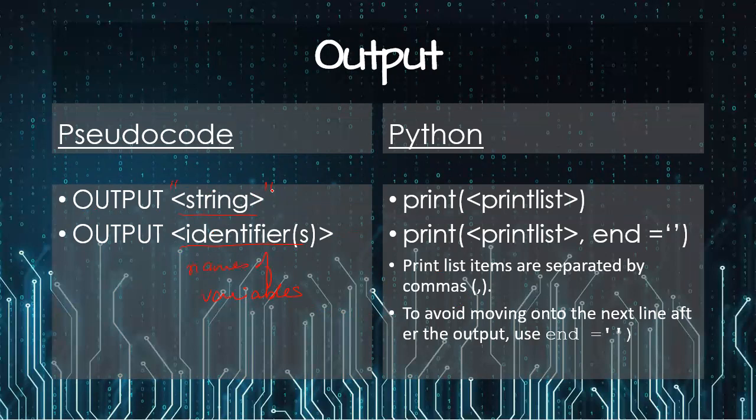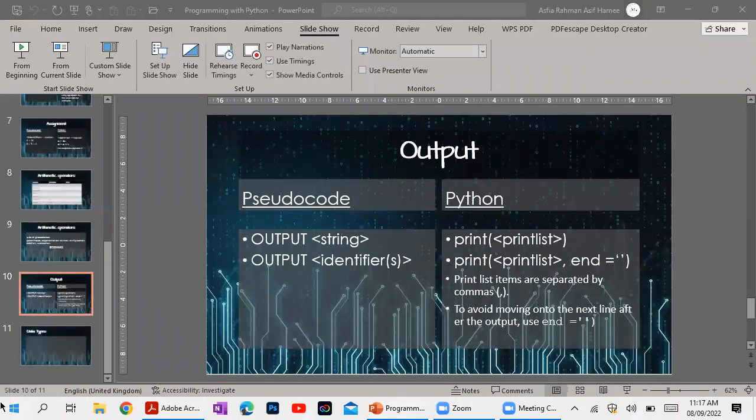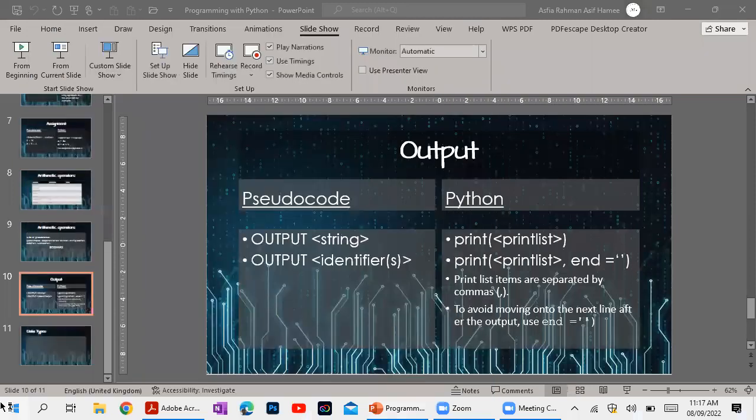For Python we have print. As I remember in Python it's case sensitive, you have to write in the lowercase print and then the brackets, and whatever you have to print you put it inside. Or print print list comma and equal double single quotes. What is this end mean? Let me show you.